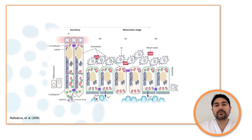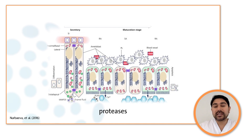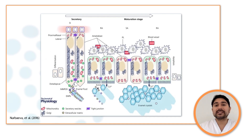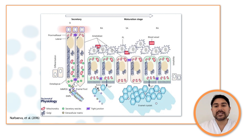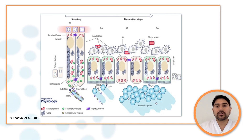During the maturation stage, the immature enamel reaches its final thickness. Extracellular matrix secretion stops and its degradation begins, mediated by proteases such as metalloproteinase 20 or kallikrein 4. Finally, ameloblasts pump ions into the extracellular matrix forming hydroxyapatite crystals, which are organized to form enamel prisms, and the extracellular matrix proteins continue to be removed to make room for crystal growth.